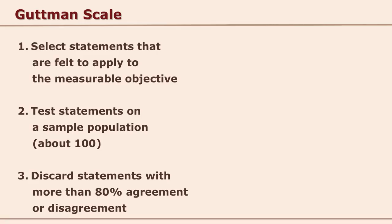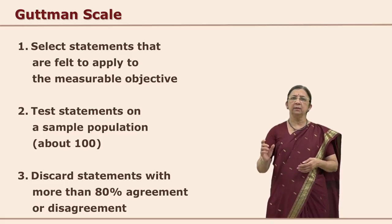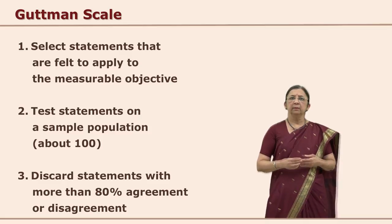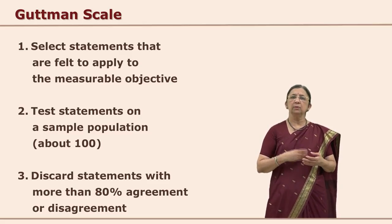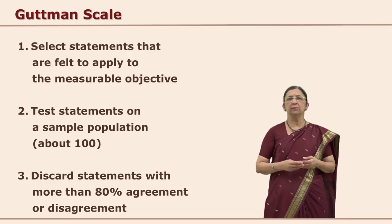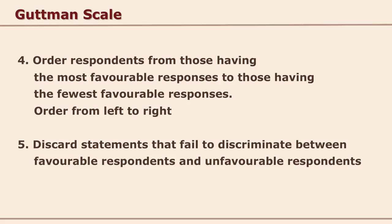Now let us see how to construct the Guttman scale. You select statements related to the measurable objectives for the concept, trait, or attitude you want to evaluate. You select about 100 sample judges and give them the list. Statements with 80% or above agreement or disagreement can be discarded because they are too extreme. You then arrange the remaining statements from most favorable to least favorable and discard statements that fail to differentiate between the two extremes.